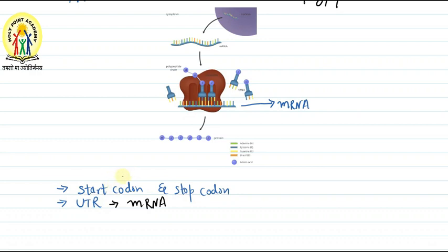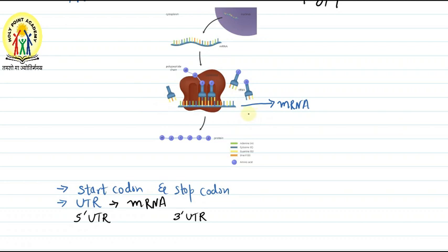The UTR regions present before the start codon are called the 5 prime UTR, and the region present after the stop codon is called the 3 prime UTR. So on the mRNA, we have: 5 prime UTR → start codon → translational unit → stop codon → 3 prime UTR.